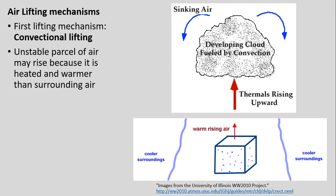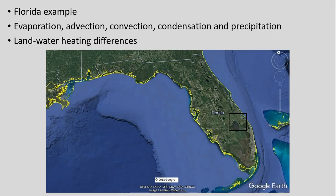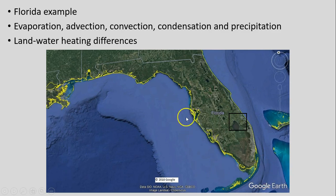If that air is unstable and as it rises and cools, the parcel's air remains warmer than its surrounding air, it's going to continue to rise. As that air cools, it may reach a saturation point, and we may then see condensation and the creation of clouds, and possibly even precipitation. In this convection example, the best place to look is Florida — the peninsula sticking out into the Atlantic Ocean and Gulf of Mexico, surrounded by very warm waters.